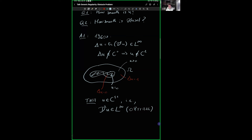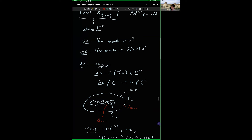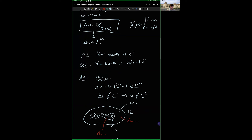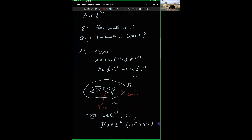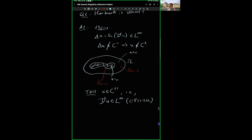C^{1,1} regularity holds essentially for every smooth obstacle. If the obstacle is C^{1,1} then the solution is C^{1,1}. One can also be more precise. For the purposes of this talk, think of everything working for C-infinity obstacles, up to a small non-degeneracy condition. So this answers question 1. Now we want to enter question 2 — the regularity of the free boundary — which is really the goal.